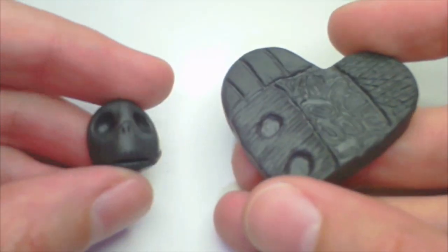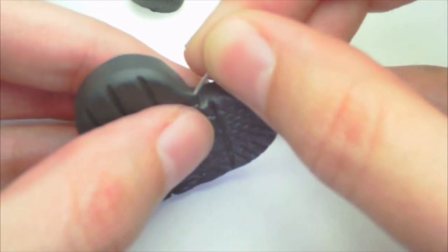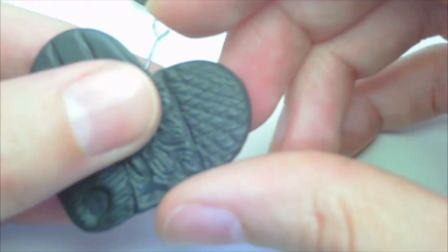And if you'd like it to be a charm, go ahead and add an eye pin at this point. Then bake both the shapes.